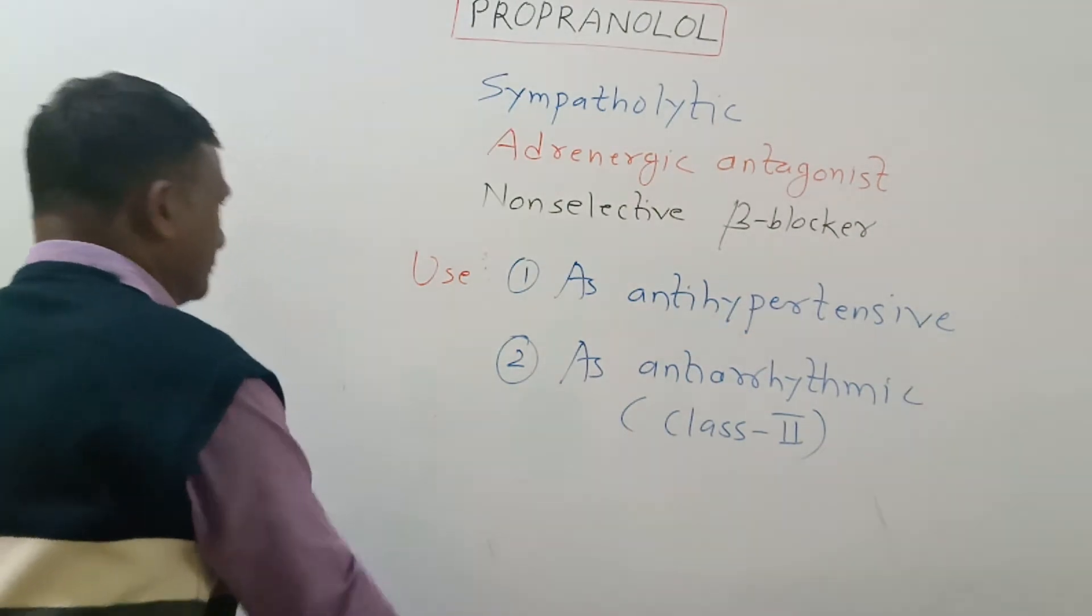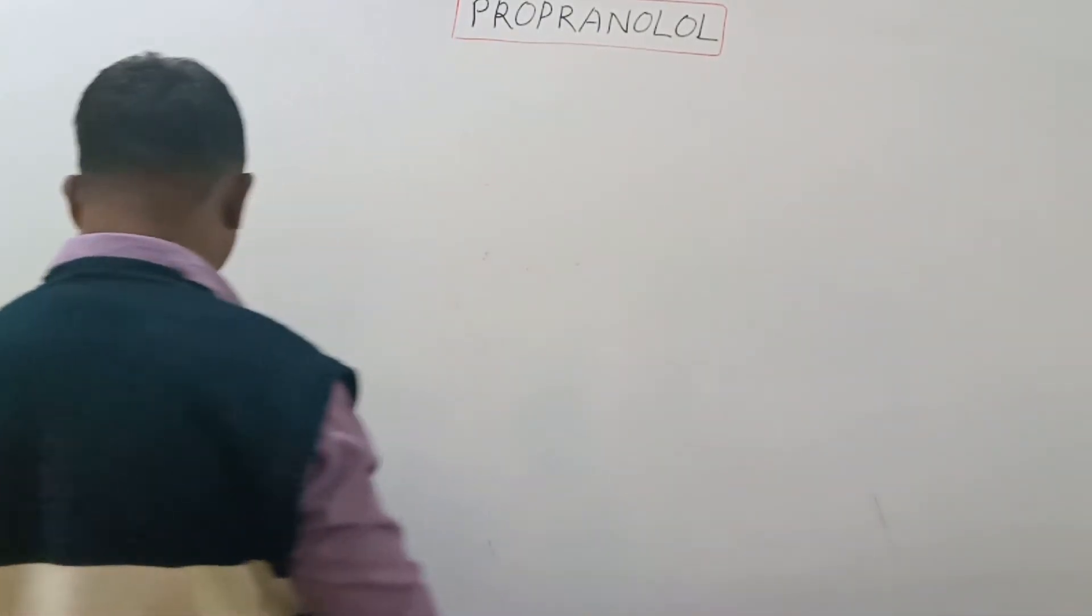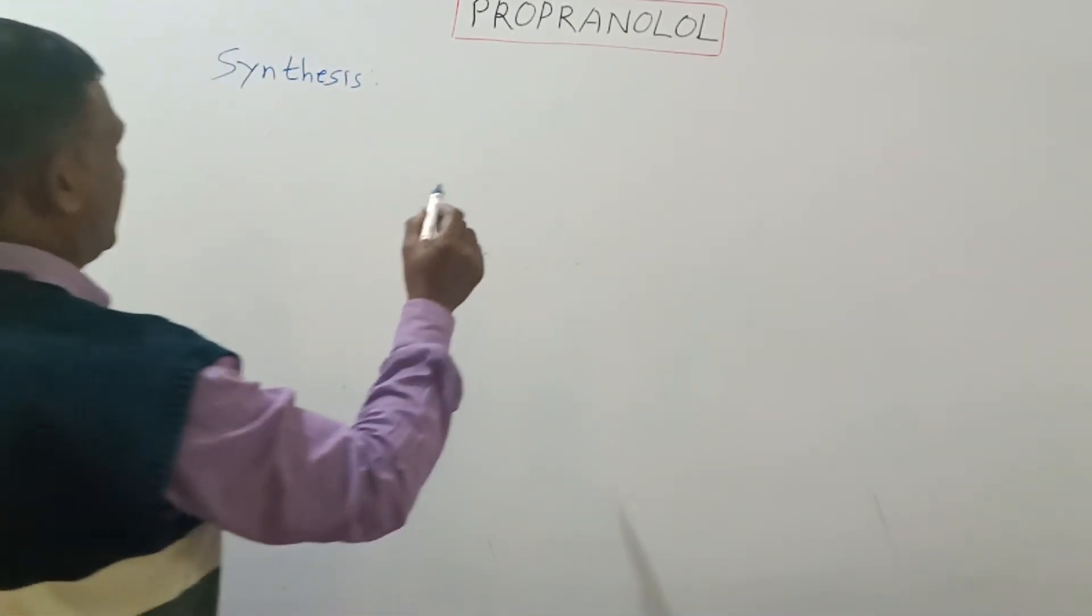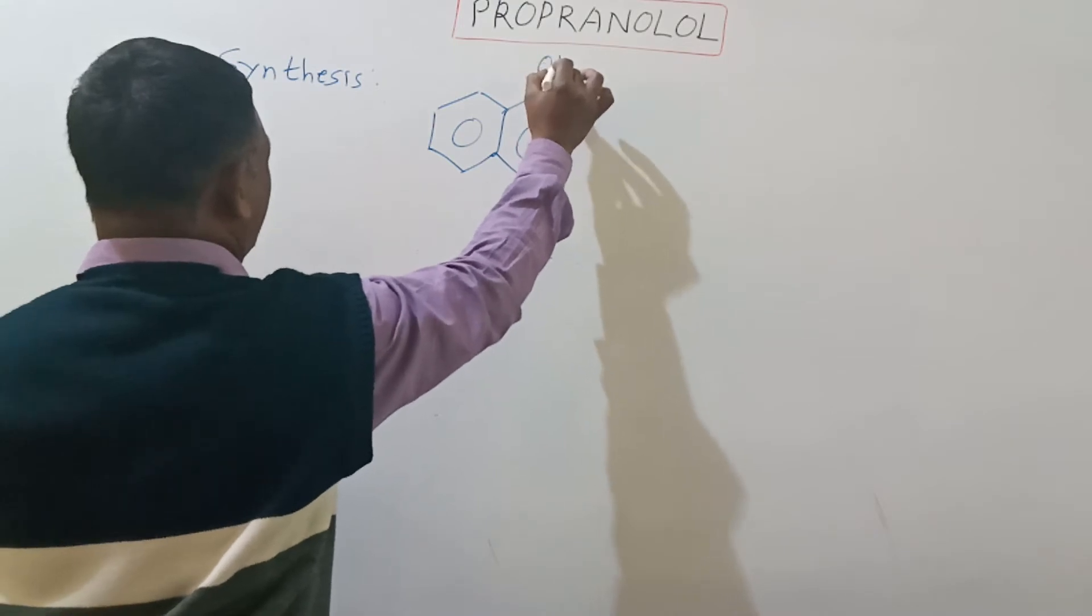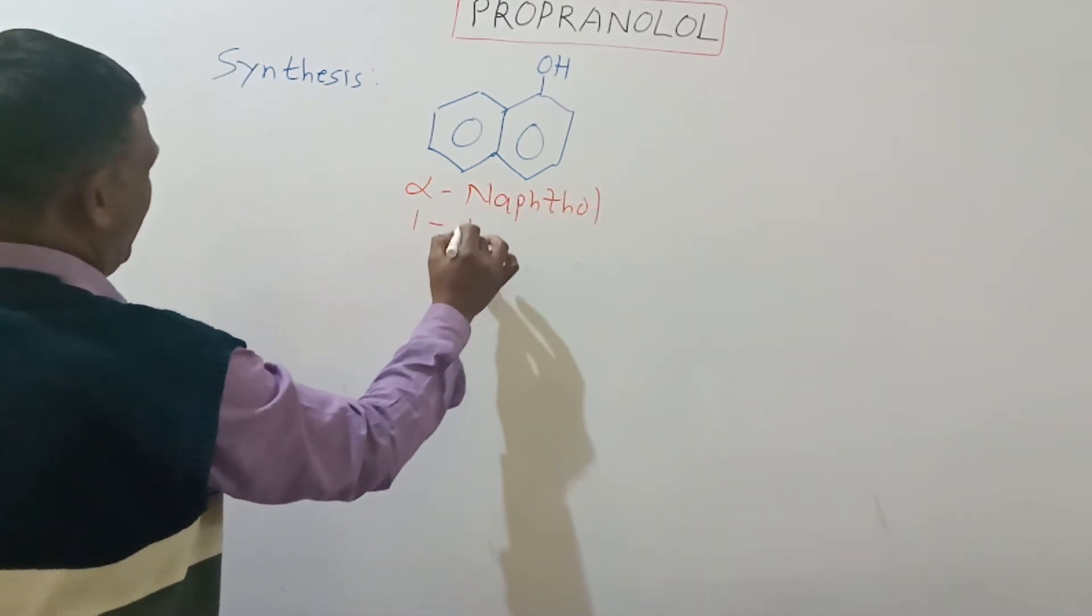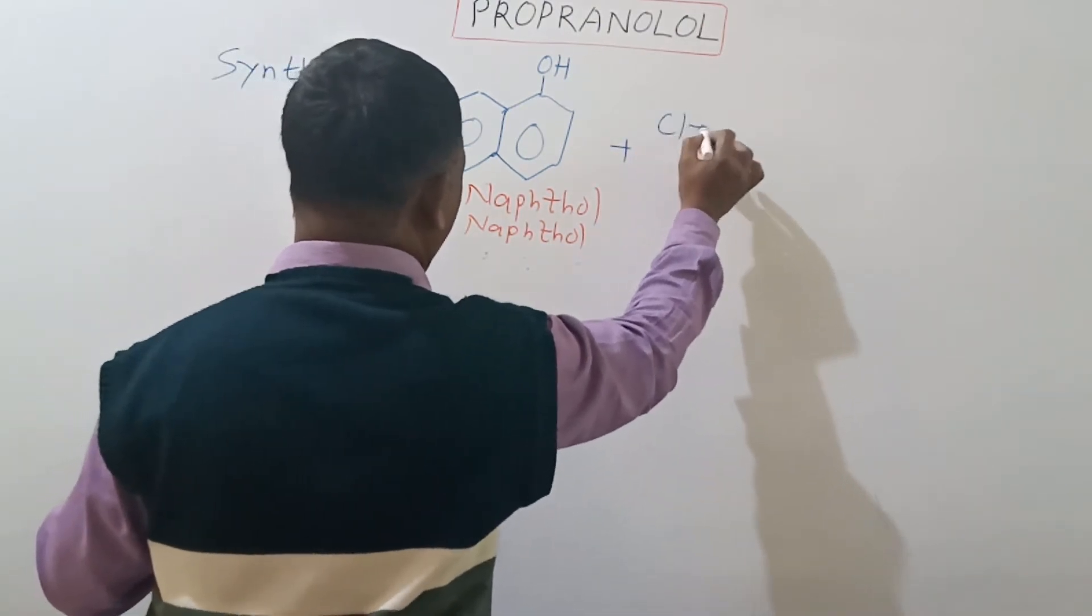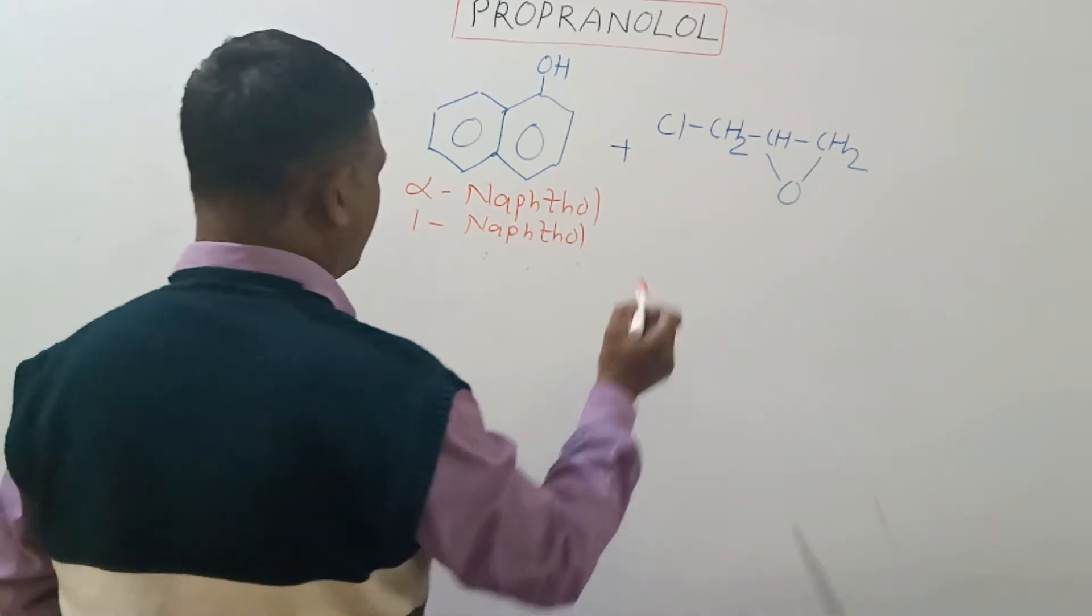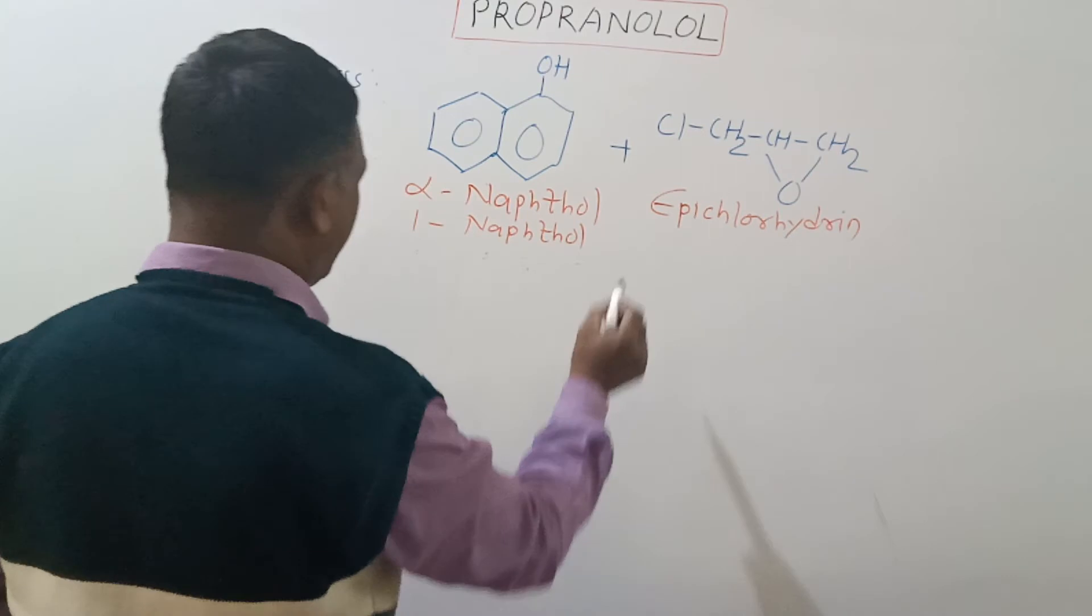Let's go for the synthesis of this drug. Synthesis of this drug starts with this starting material which is called alpha-naphthol, also called 1-naphthol. The alpha-naphthol reacted with this compound which is called epichlorhydrin. The reaction takes place in presence of aqueous solution of sodium hydroxide.